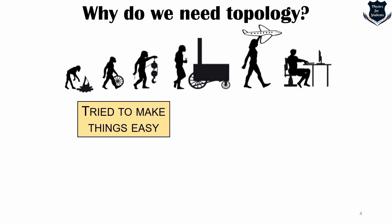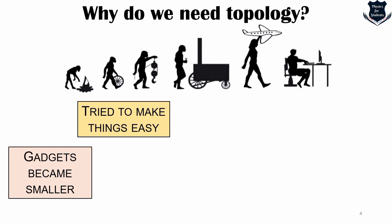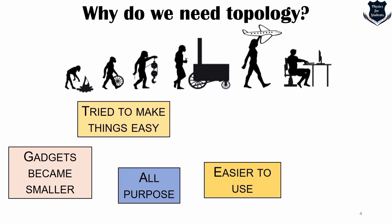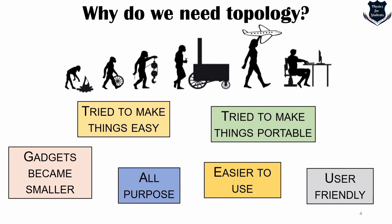The basic objective of these developments was to make things easy. Gadgets which evolved slowly became smaller, and they also became all-purpose rather than serving a specific purpose like a washing machine or telephone. Most importantly, they became easier to use, more user-friendly, and more portable. Topology is also a human advancement — a critical thinking advancement — which made mathematics much more easier, all-purpose, easier to use, user-friendly, and more portable.